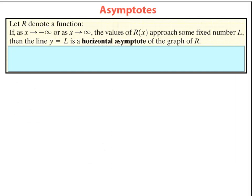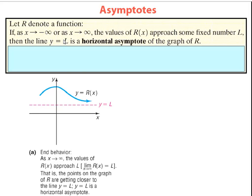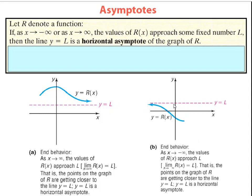The book formally defines a horizontal asymptote: as x goes toward negative infinity or positive infinity — looking out far to the left or right of the graph — if the y values approach a fixed number, we call that the horizontal asymptote. As x goes out toward infinity, notice the y values of the graph approach that horizontal line. This is the formal definition of a horizontal asymptote.